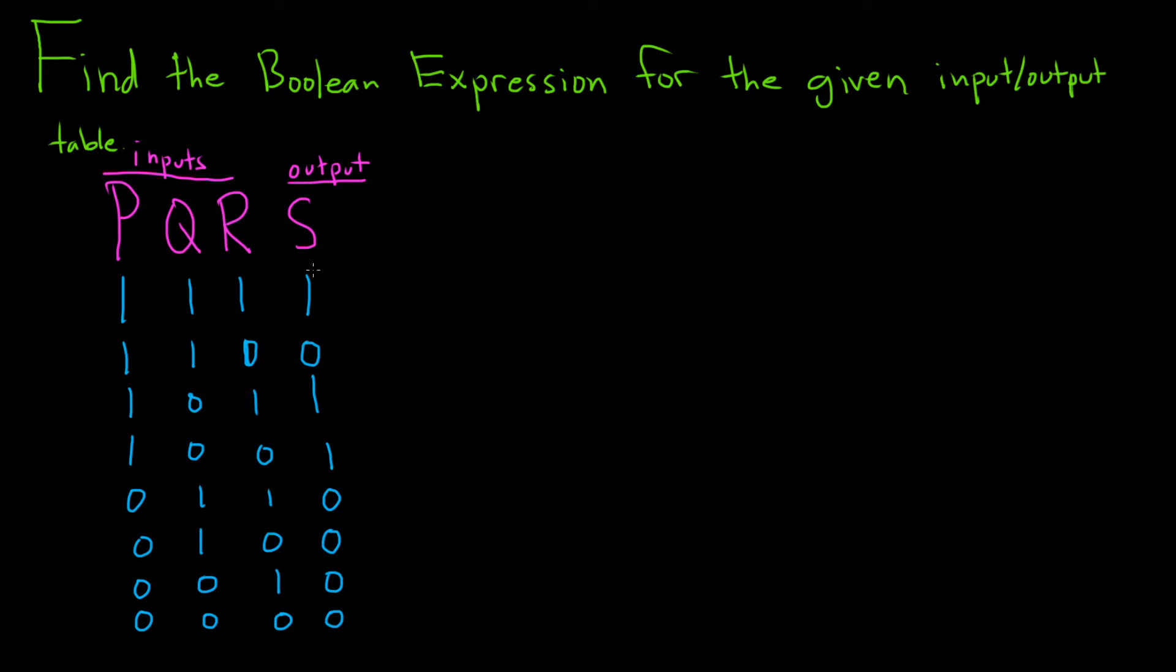So the way to do this is to focus on all of the output values that are ones. So here, here, and here. And then what you do is you create a Boolean expression that will result in one for this output value.